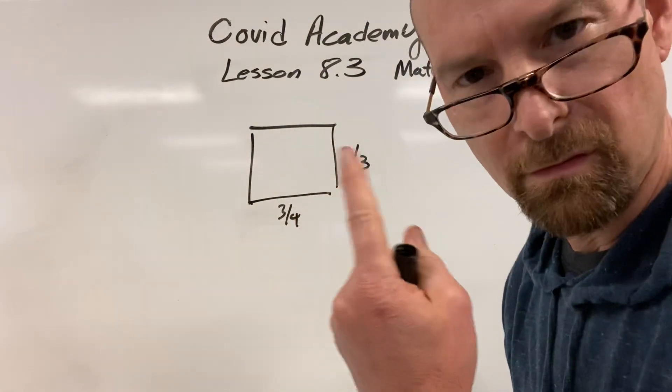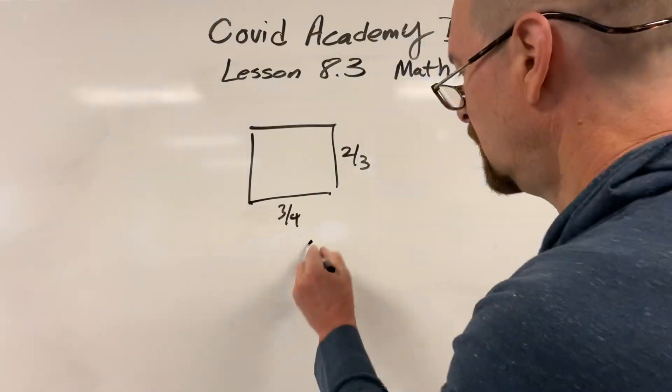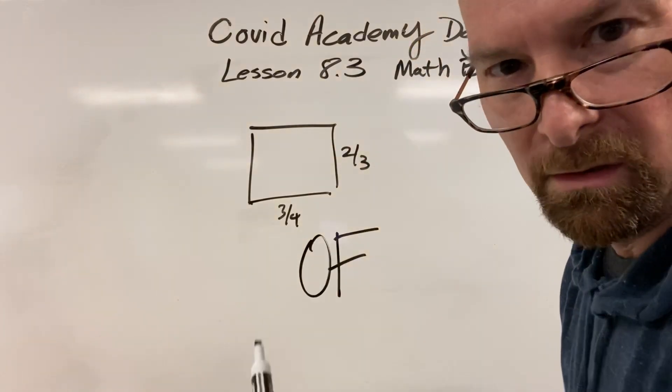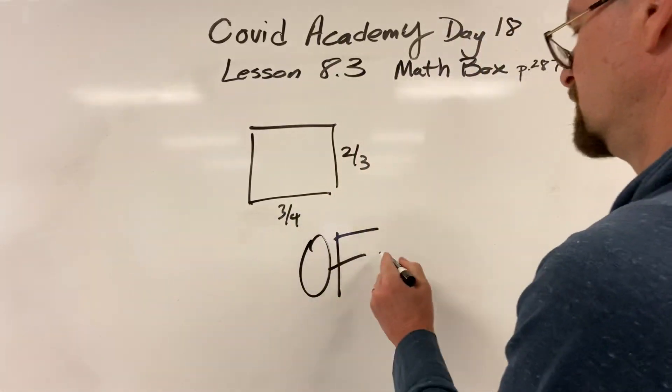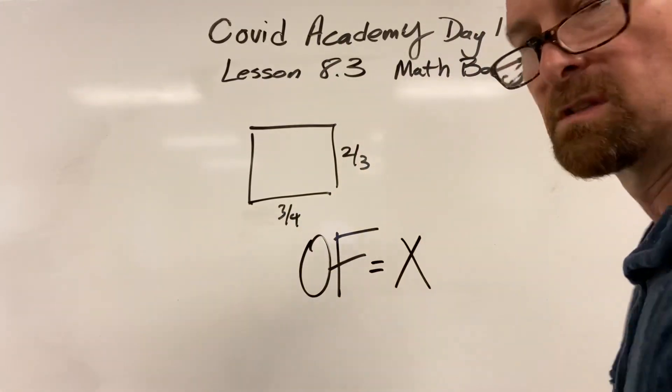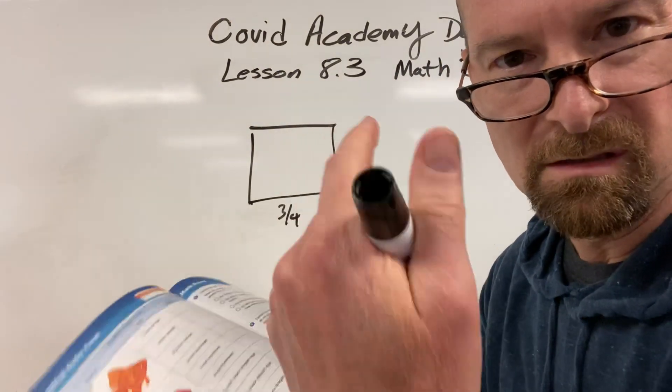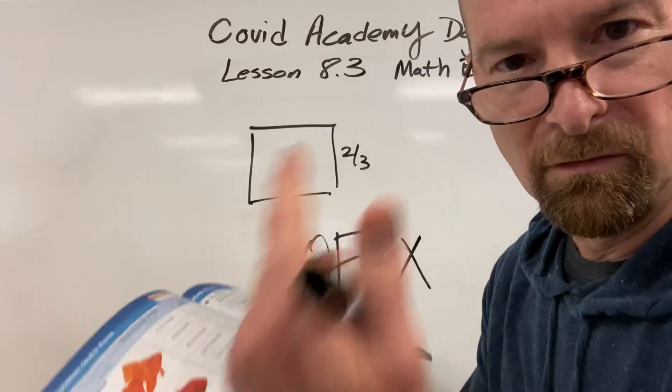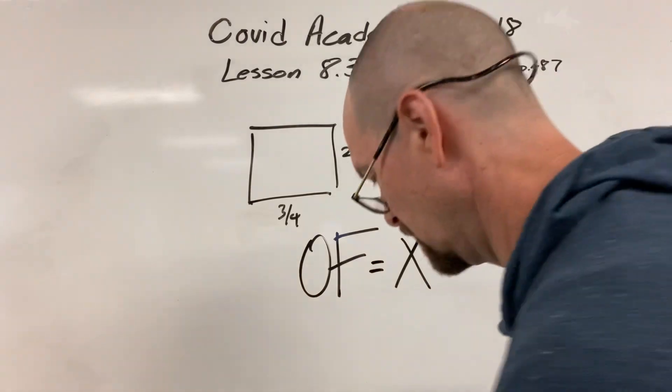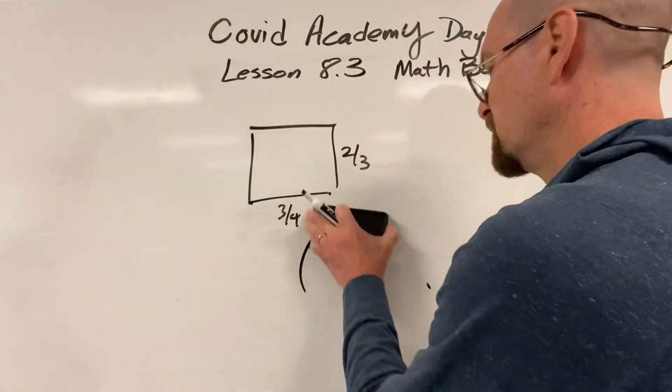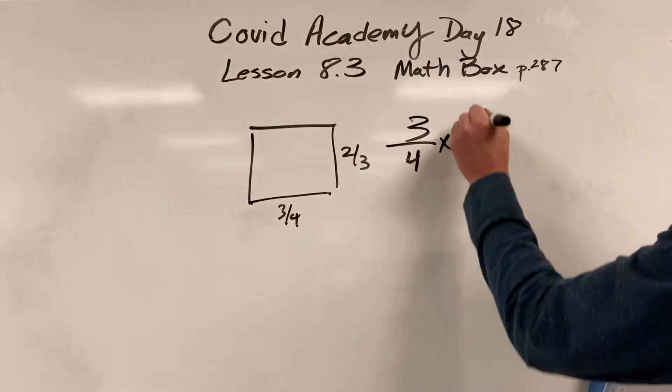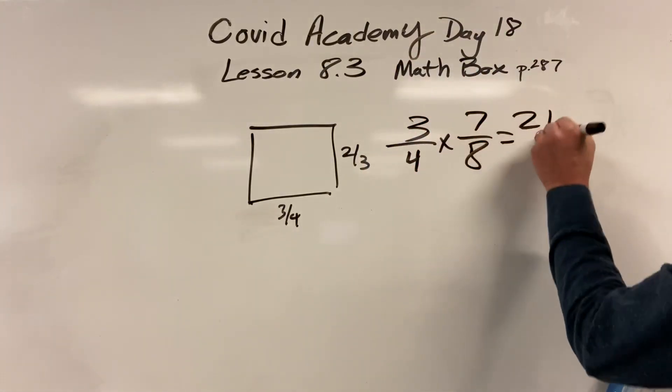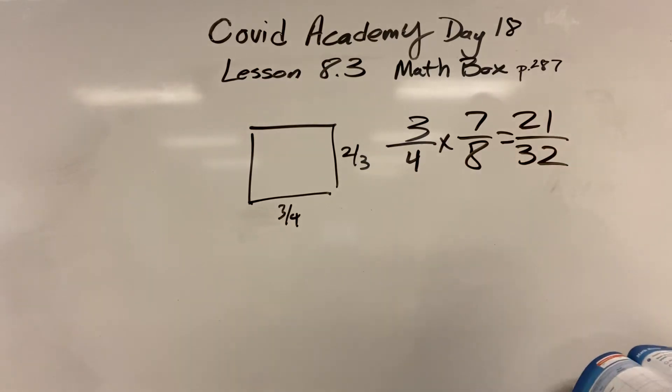Seven-eighths of. Did you hear the word of? Very important word. When you hear this word, of equals times. Say it with me now. Of means times. So we do three-fourths times seven-eighths. We get twenty-one thirty-seconds. That's one of them. Very ugly fraction, but we keep it anyway.